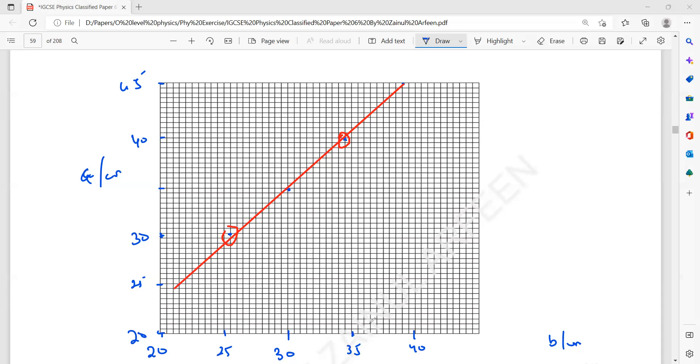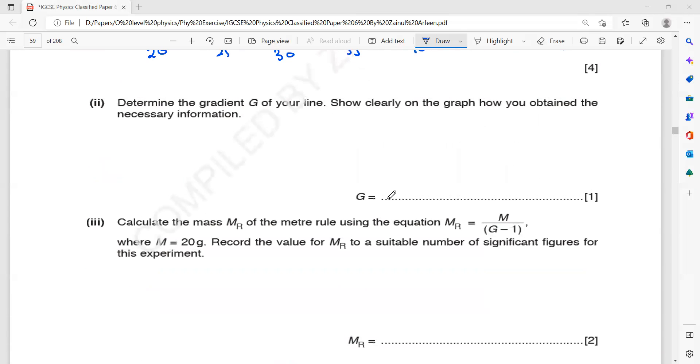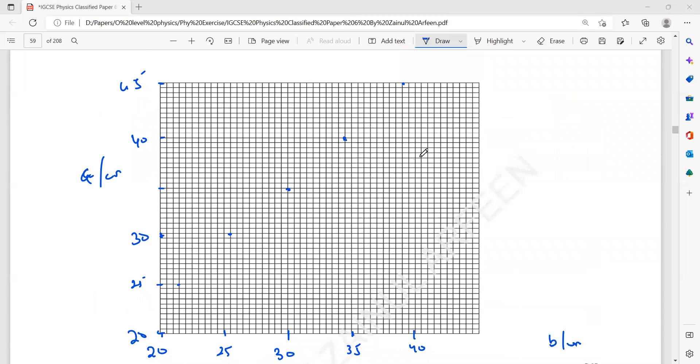The next part we have to find the gradient and show clearly on your graph how you obtain the gradient. You have to take any two values. Don't take the same points which you use to plot the graph. Take any point along the line. You can draw your y2 minus y1 or x2 minus x1, but try to take about five centimeter distance or spacing between the two points to have a more accurate result. Longer lines, more accurate or close to accurate result you get.